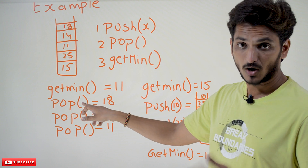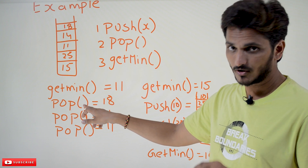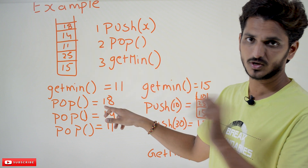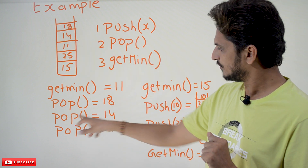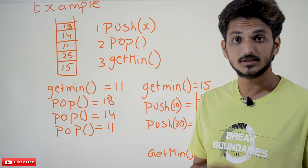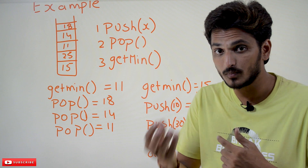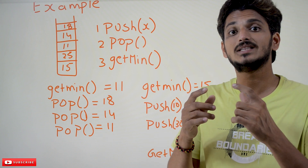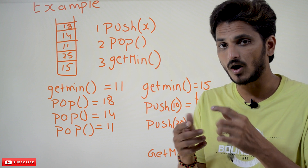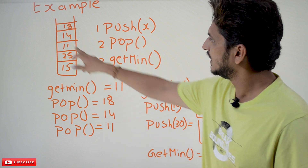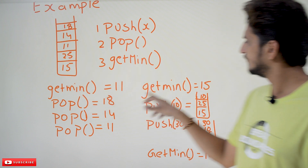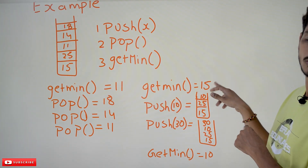If you apply the pop operation, what is the element it has to display? 18. You take out 18 and display it. Pop 14, pop 11. The key point to understand: whenever you pop 11, what is the minimum element present in the stack after popping 11? When you pop 11, the minimum element is 15. If you apply get min, it is going to display 15.